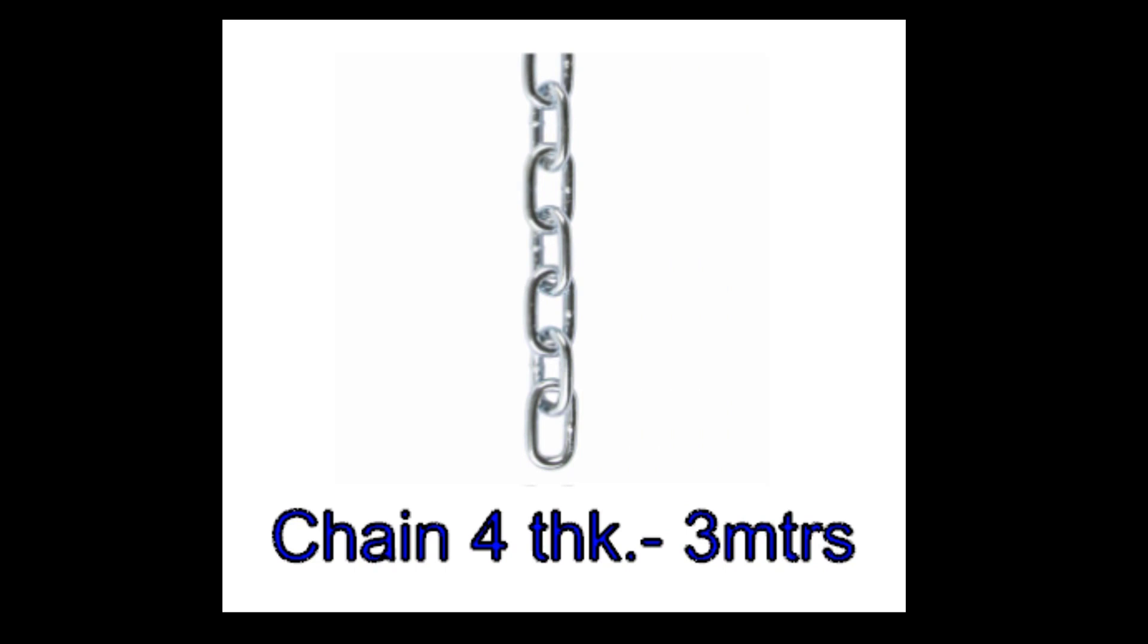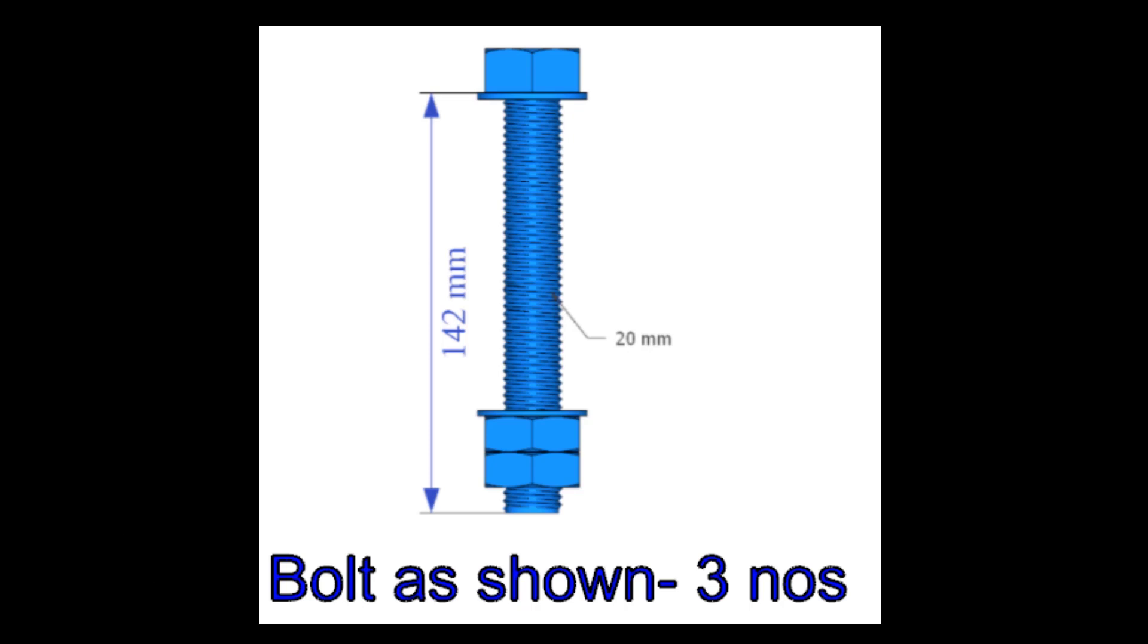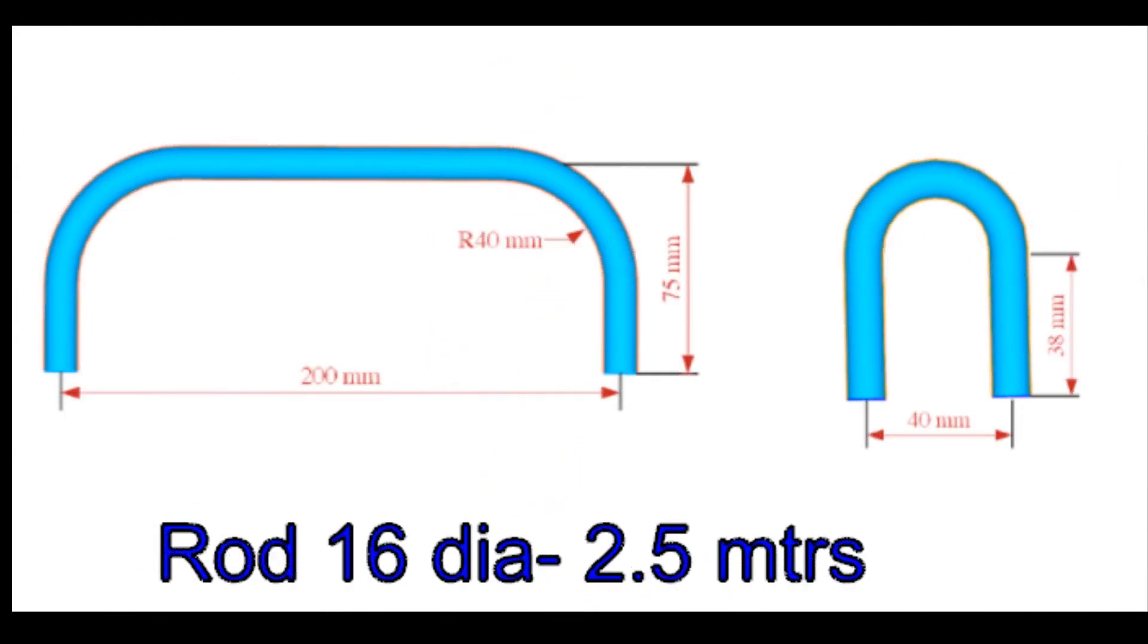3mm thick chain, 3 meters. 20mm diameter bolts, 3 numbers as shown. 16mm diameter rod for 6 numbers handles and 3 numbers hooks.